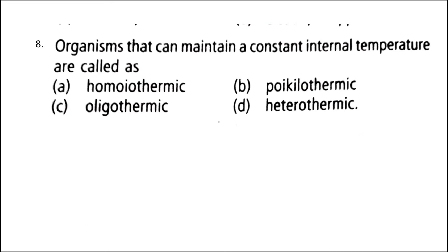Next: organisms that can maintain a constant internal temperature are called — the correct answer is option A: Homeotherms. Animals with constant body temperature are called homeotherms and have an insulating coat to check the loss of body heat — hair in most mammals, blubber or subcutaneous fat in whales and seals, and feathers in birds. Shivering warms the body and perspiration cools it. These are also termed endotherms. Poikilotherms are cold-blooded animals unable to regulate body temperature; they are also called ectotherms. Examples: fish, frog, lizards.